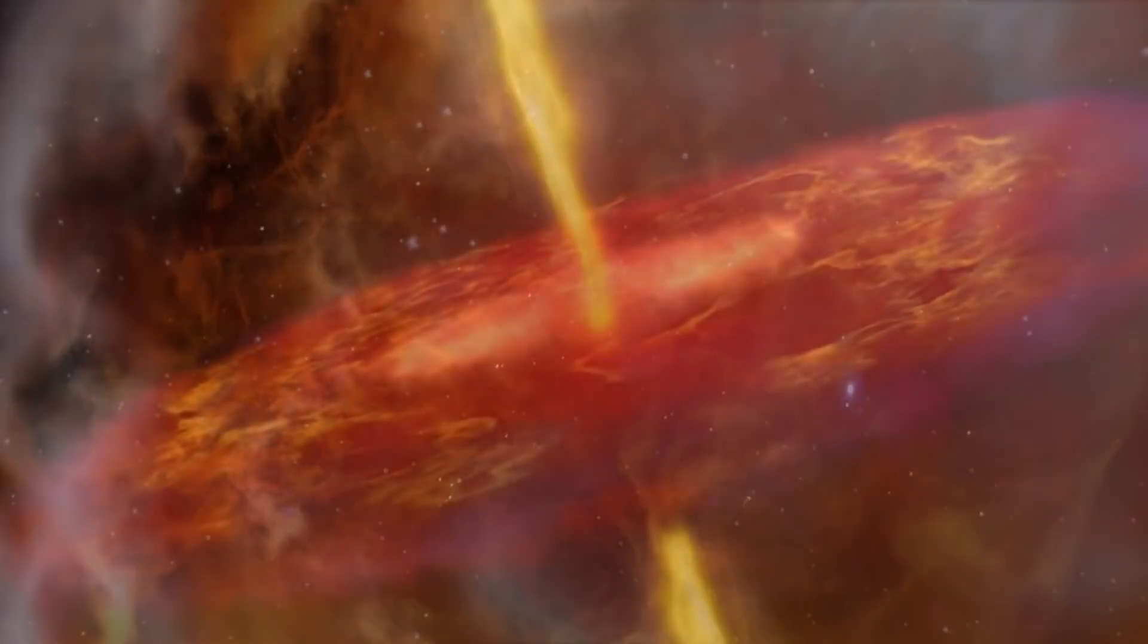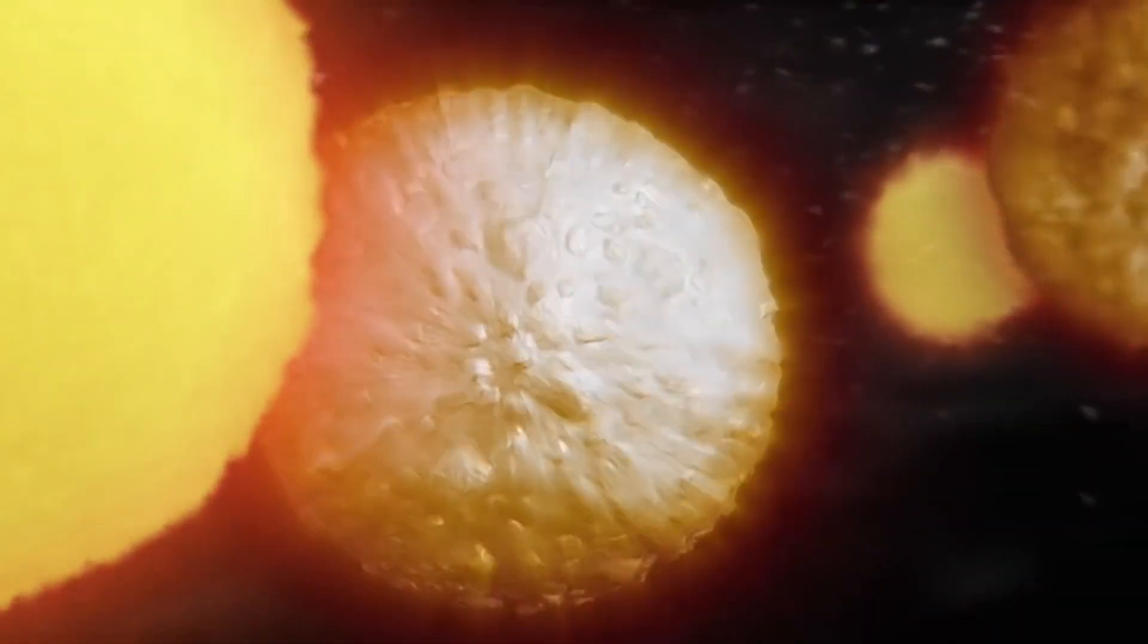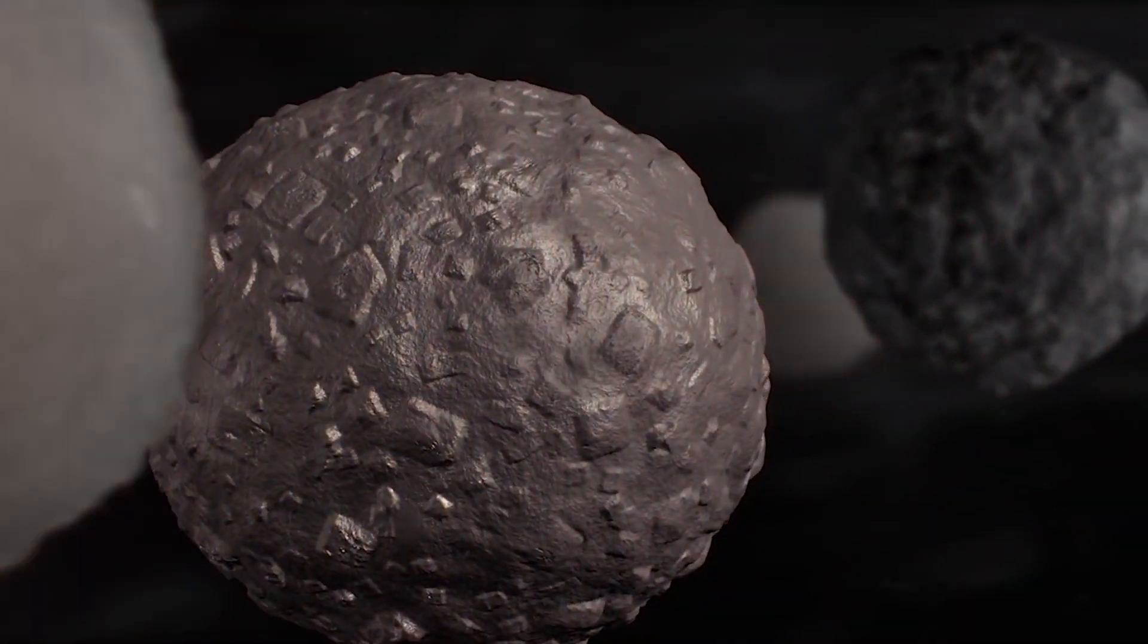When the solar system first formed, over four billion years ago, Mars and Earth formed out of the same stuff, and so they looked very similar.